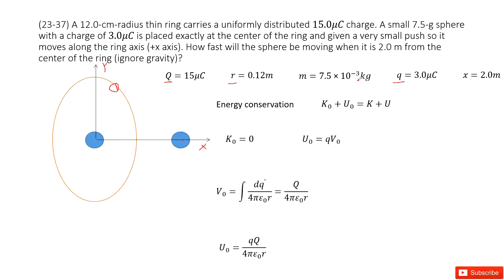In this case, energy is conserved, so the initial energy must equal the final energy. Initially, the spherical object is stationary at the center, which means the initial kinetic energy is zero. So we only need to care about the initial potential energy.